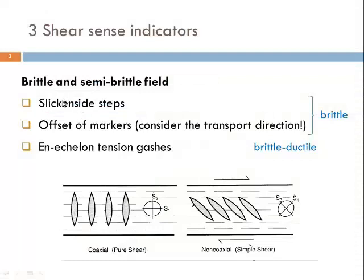In the brittle and semi-brittle field there will always be a component of fracturing associated with the development of shear sense indicators. We have seen slicken side steps. We might also find offset markers — if a geological marker cross-cuts a fault surface, the direction and amount of offset can be used as a shear sense indicator in both the brittle and ductile field.